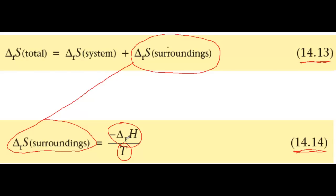So we now have a way to find the total entropy change using quantities that refer to the system only, the entropy and enthalpy changes of reaction. This means that we can forget about the surroundings, which makes things a lot easier.